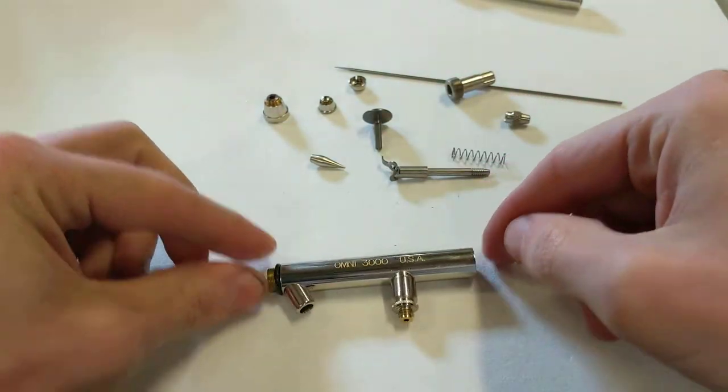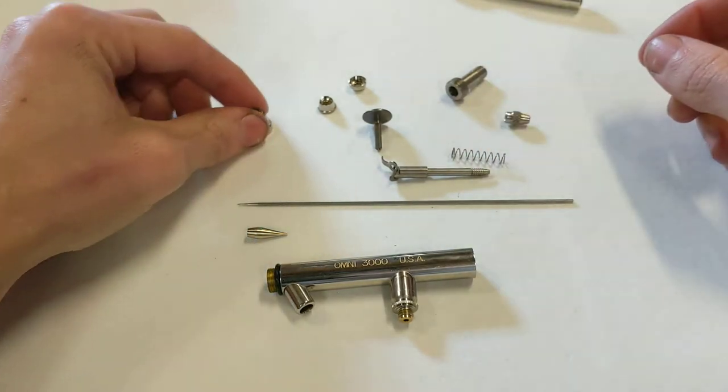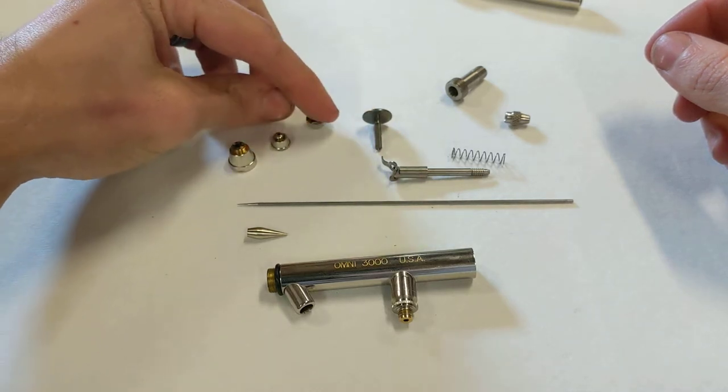Okay, so this is the body of the airbrush, the tip, the needle, the air cap thing, the other air cap thing, and the farthest front air cap thing.